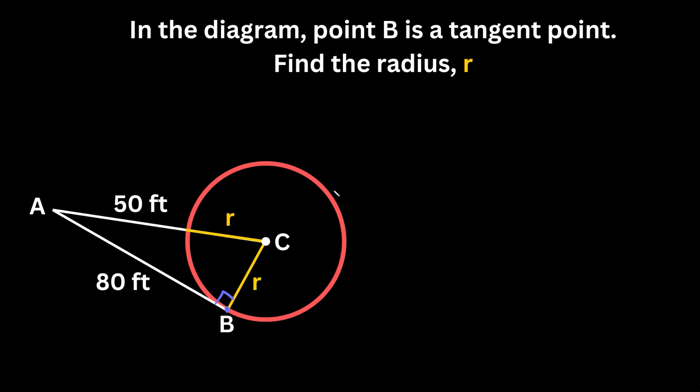You can use the Pythagorean theorem, which is A² + B² = C², where A and B are the two shorter sides and C is the hypotenuse.